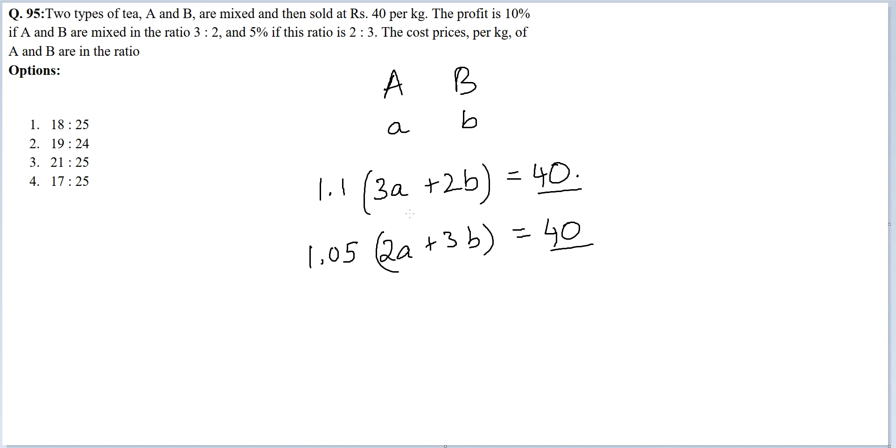Now you see the RHS in both cases is the same, therefore the LHS should also be the same. So we get 1.1(3a + 2b) = 1.05(2a + 3b). Expanding, you get 3.3a + 2.2b = 2.1a + 3.15b.